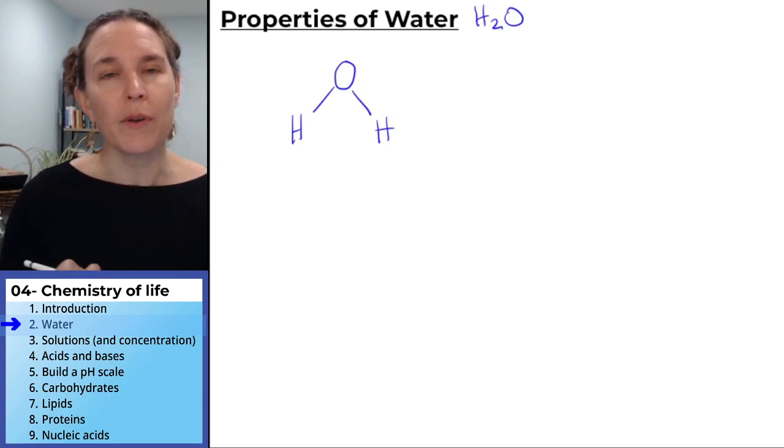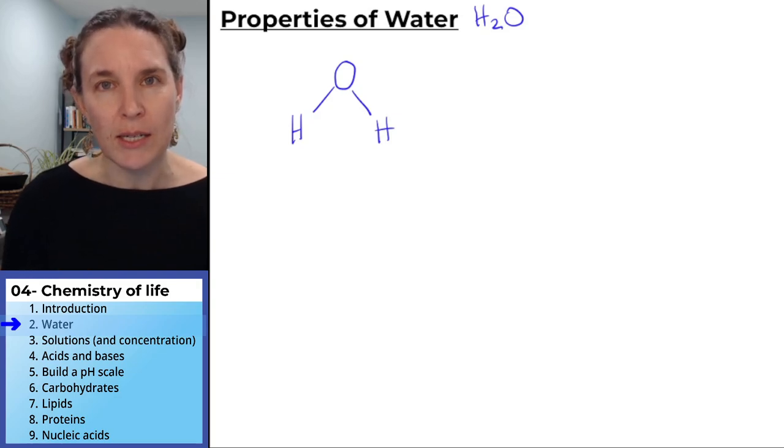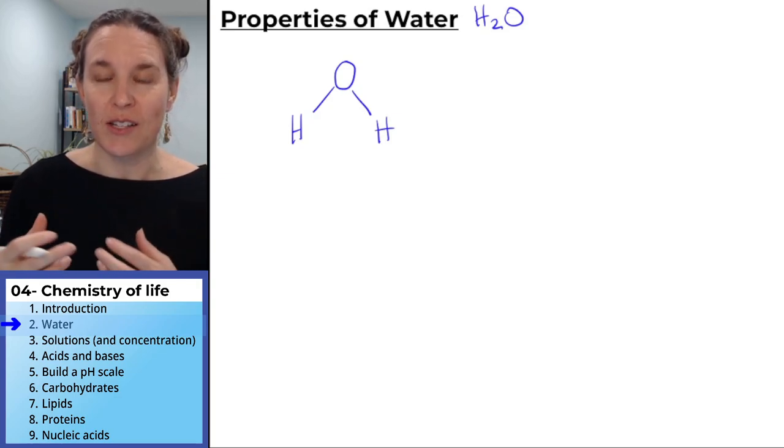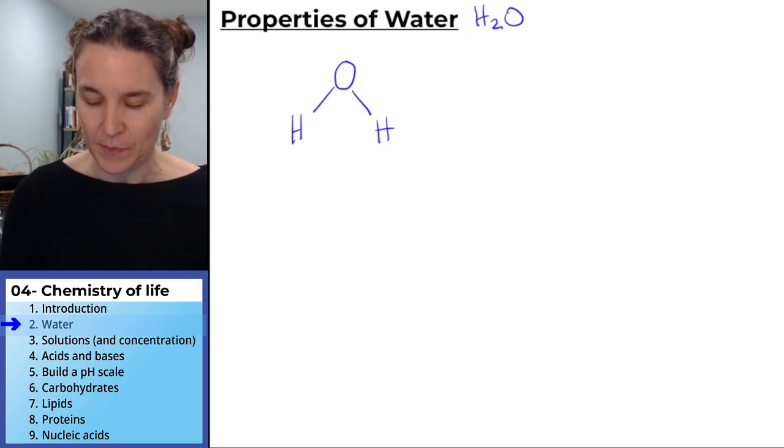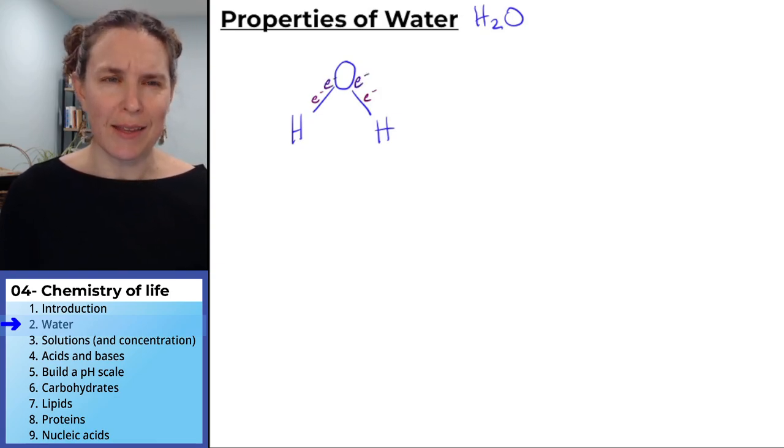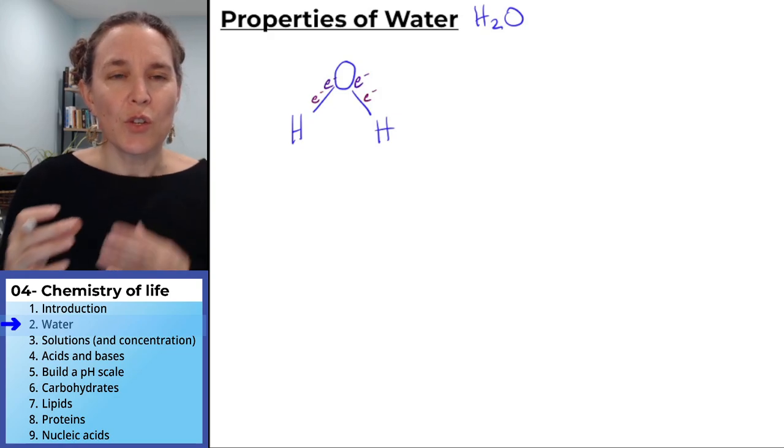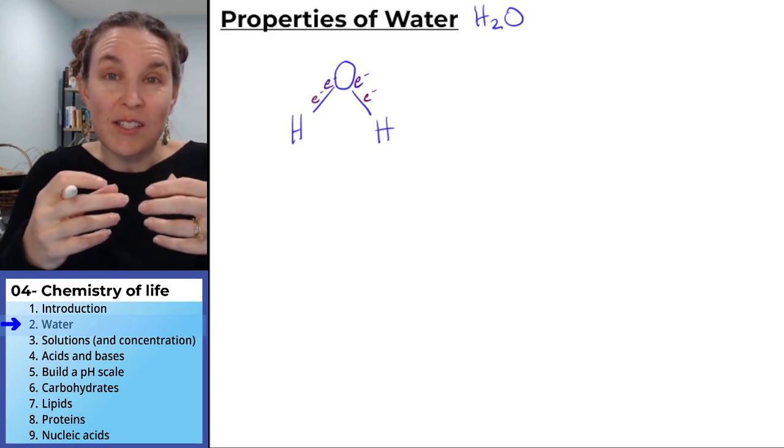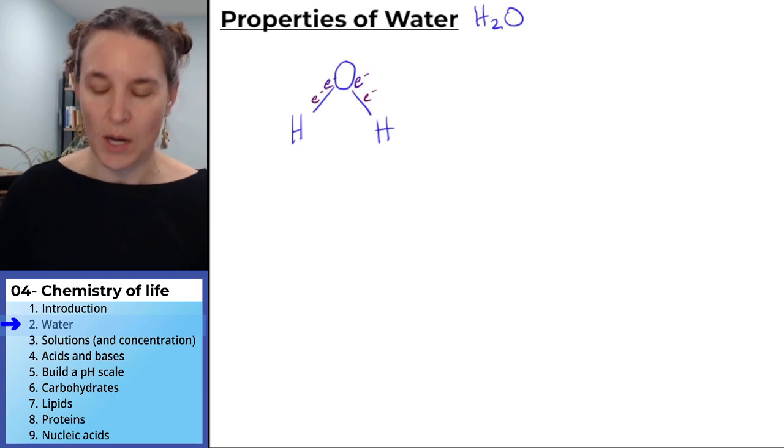Remember that a chemical bond is a sharing of electrons. In this case, hydrogen has one electron. Each hydrogen has one electron and it shares those electrons with the oxygen, which has six electrons. So you end up with these shared electrons that form those chemical bonds.